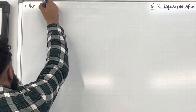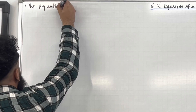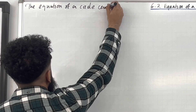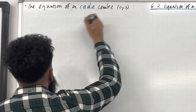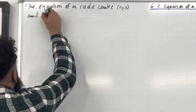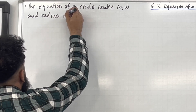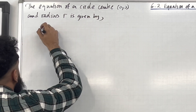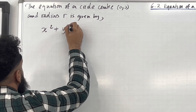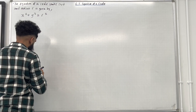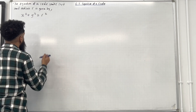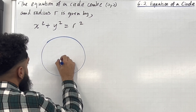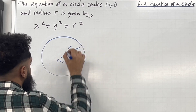First of all, the equation of a circle with centre (0, 0) and radius R is given by x squared plus y squared equal R squared. Here is a diagram: a circle centred at (0, 0) with radius R.